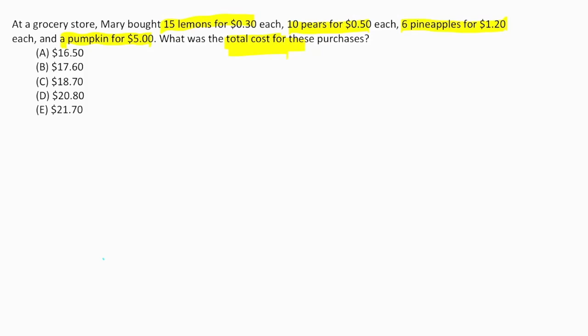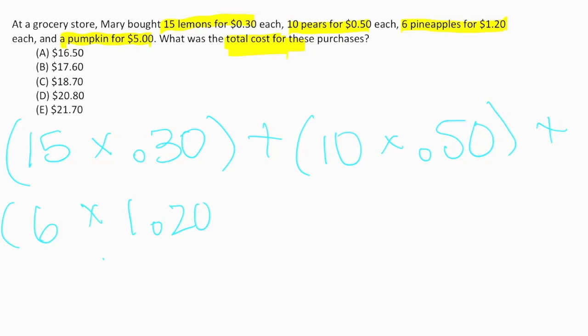We have 15 lemons for 30 cents each, 10 pears for 50 cents each, six pineapples for $1.20 each, and one pumpkin for $5. When we add up all of those things, we're going to get our total cost.